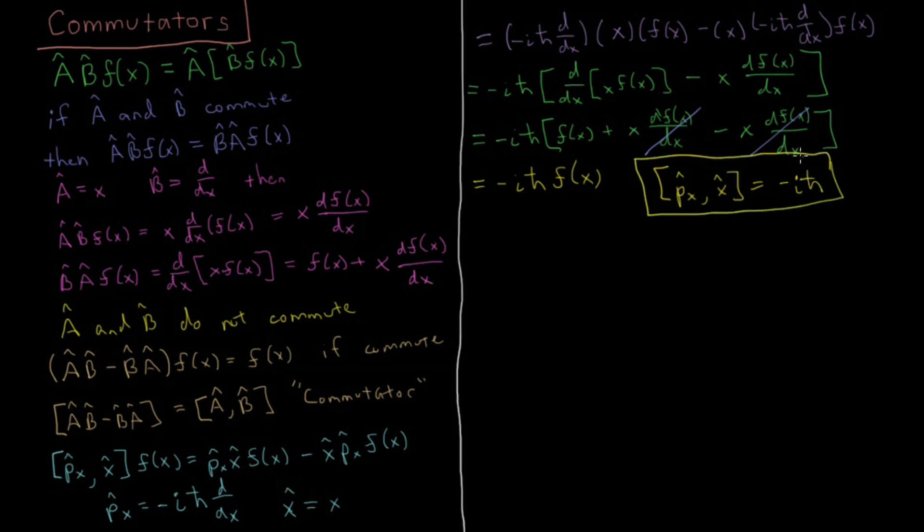This is a very important result because it goes into what the uncertainty in measuring both of those properties at the same time is. There's a property which we're not going to derive here, but which I'm just going to state. If we have the variance in A, the uncertainty squared in A, and the uncertainty squared in B, this quantity equals minus one-fourth the integral of psi star times the commutator of A and B acting on psi integrated with respect to x, and all of this squared.